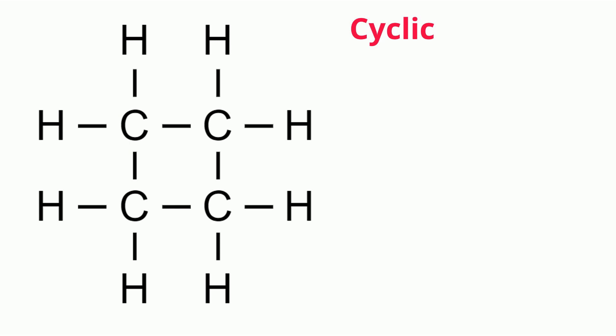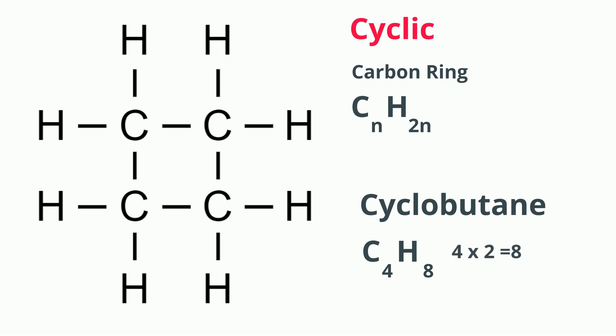Cyclic hydrocarbons have a carbon ring. The general formula is CnH2n. So let's look at cyclobutane. It is C4H8. For the hydrogen, it is 4 times 2, which equals 8.